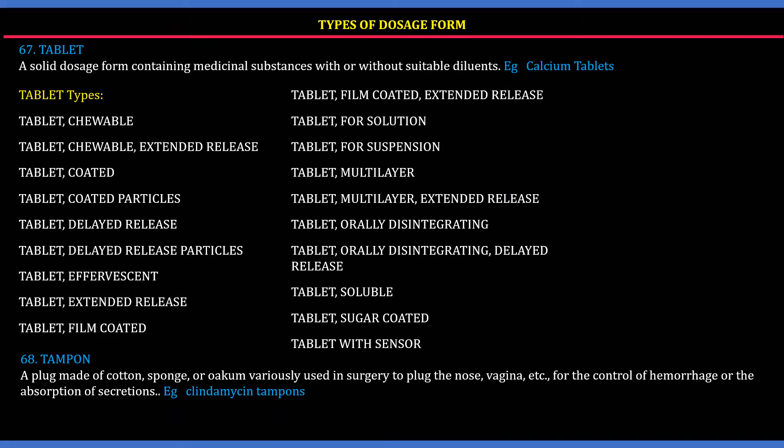67. Tablet: You are already aware about tablets. It is a solid dosage form containing medicinal substances with or without suitable diluents. Example: calcium tablets. There are several types of tablets and each is considered as an individual dosage form — a subclass of tablets.